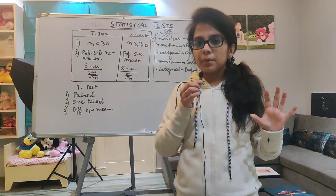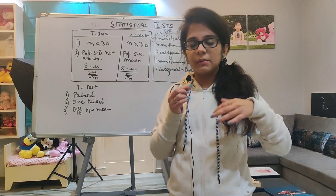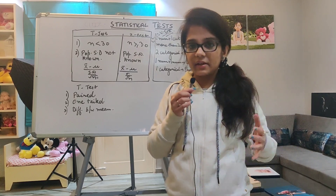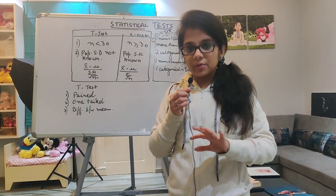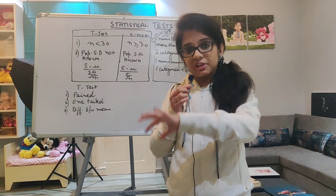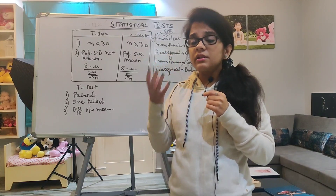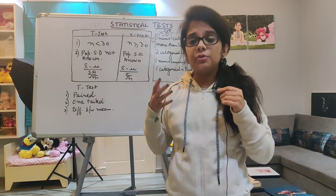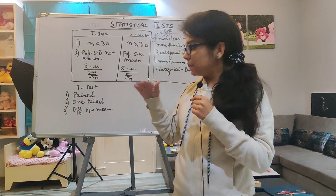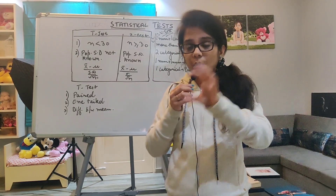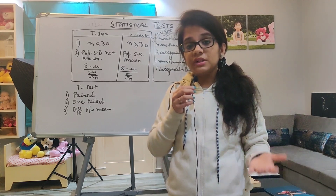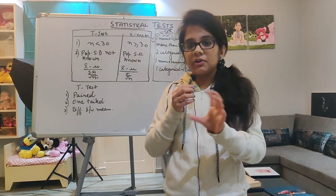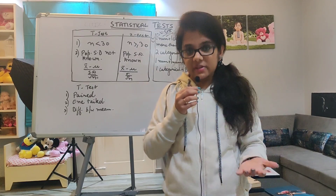Suppose you are a manager in a company. You took a test of your employees to know their performance — you have their pre-test scores. Now you provided them with training, and then you took their post-test, meaning after training you took a test and you want to know whether the training was effectful for the employees. So here paired t-test will be applicable. Paired t-test means when you have before and after data — pre and post.